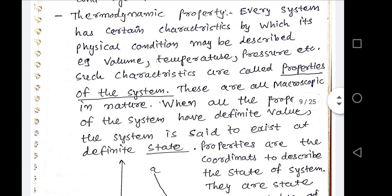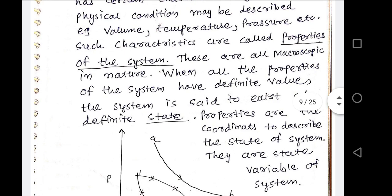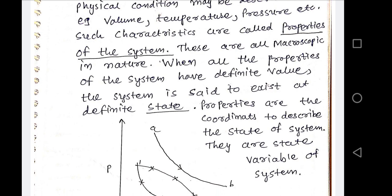All these properties are macroscopic in nature, meaning they can be measured by any instrument or meter. Now when all the properties of the system have a definite value, the system is said to exist at a definite state. For example, at a particular fixed time — say 5:20 p.m. — that bottle has a volume of 0.1 meter cube, temperature of 15 degree Celsius, weight of 100 grams, and pressure of 1 bar. All these properties at this time indicate the thermodynamic state of that system.